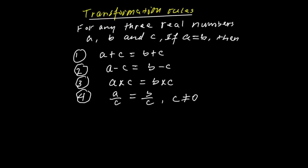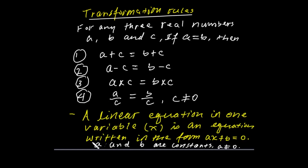Why do we have linear equations in one variable? A linear equation in one variable is an equation involving the variable x, which is written in the form ax plus b is equal to zero. We call it a linear equation in one variable.